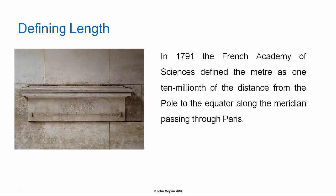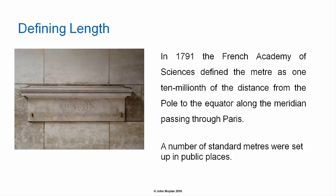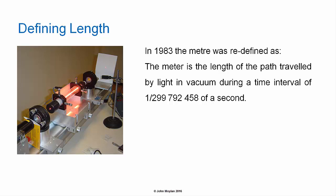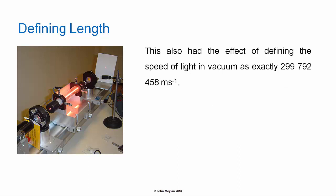In 1791, the French Academy of Sciences defined the metre as one ten-millionth of the distance from the North Pole to the equator along the meridian passing through Paris, and a number of standard metres were set up in public places. In 1983, the metre was redefined as the length of the path travelled by light in a vacuum during a time interval of 1 over 299,792,458 seconds. This also had the effect of defining the speed of light in a vacuum as exactly 299,792,458 metres per second. As length was now defined in terms of the speed of light, the speed of light was also defined in terms of length.